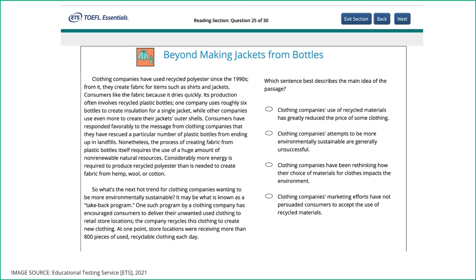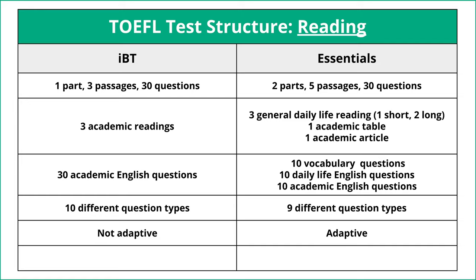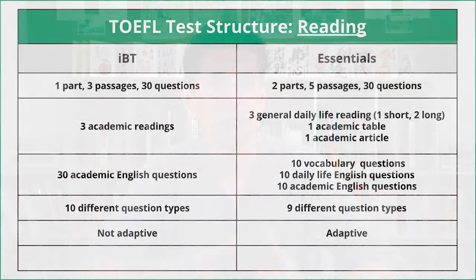The academic text will be the hardest reading you have, around 200 words. In total, the Essentials test has 30 questions: 10 vocabulary, 10 daily life, and 10 academic English questions based on the passages. There are 10 different question types on the IBT and nine on the Essentials. The IBT is not adaptive, but the Essentials test is adaptive — meaning it will change based on your performance. If you don't do well in part one, part two will be a little easier. If you do well in part one, part two will be a little more difficult.